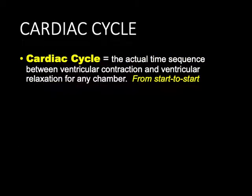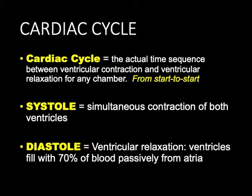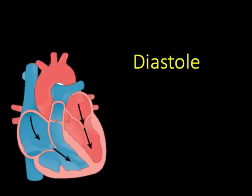The cardiac cycle is the time frame from one contraction to the next. One complete cycle is from the start of one contraction to the start of the next, and we typically look at ventricular contractions. The two terms we use are systole and diastole. Systole is the simultaneous contraction of both ventricles, and diastole is the relaxation phase, when the ventricles fill passively with about 70% of forward blood movement falling, basically as a result of gravity, from the atria to the ventricles.